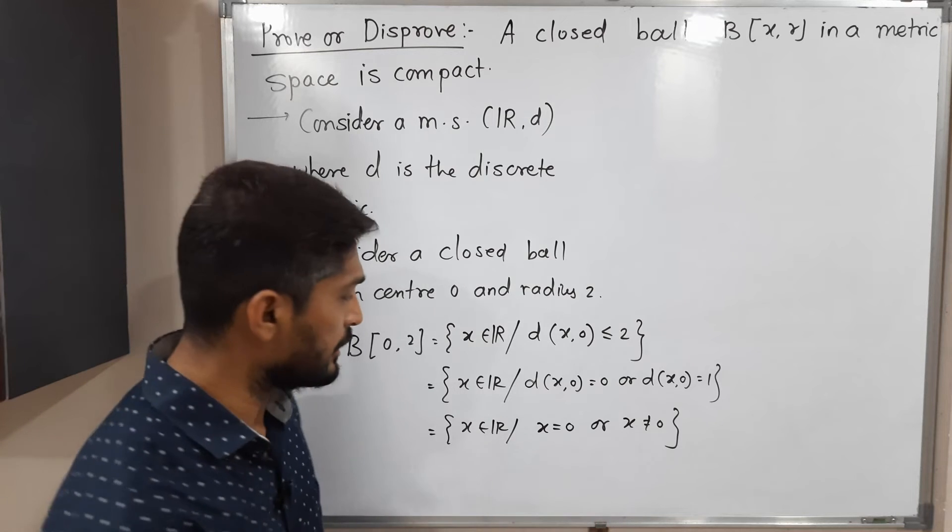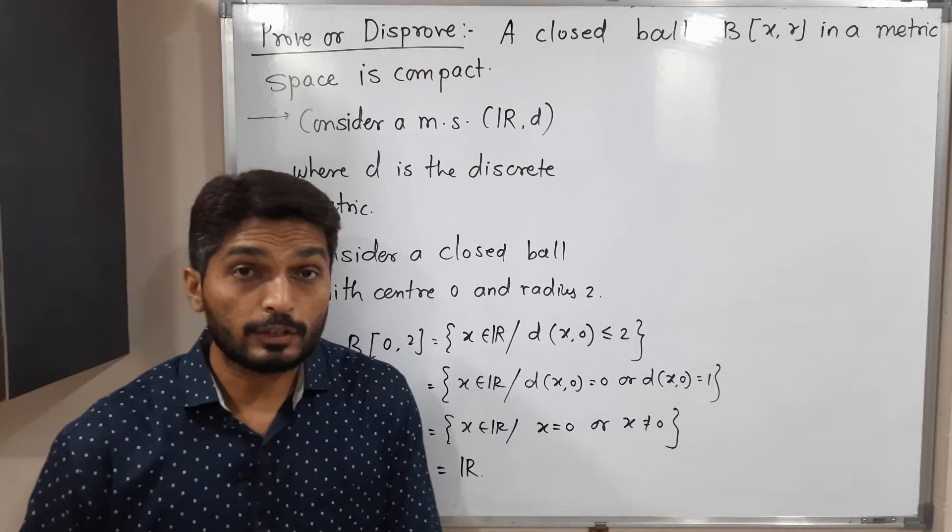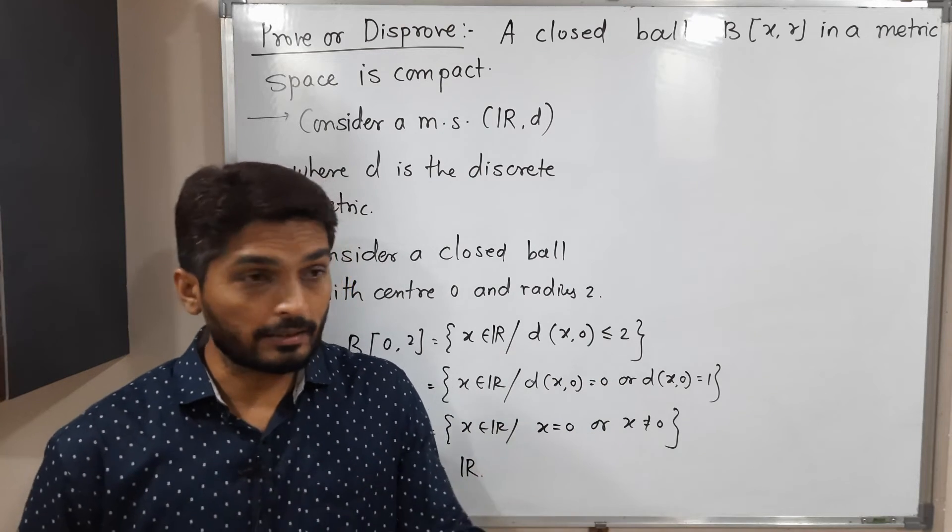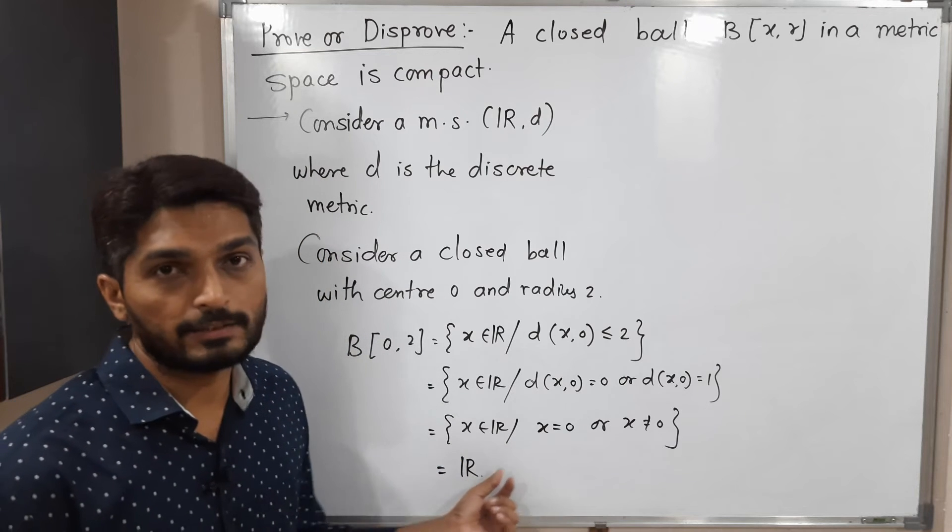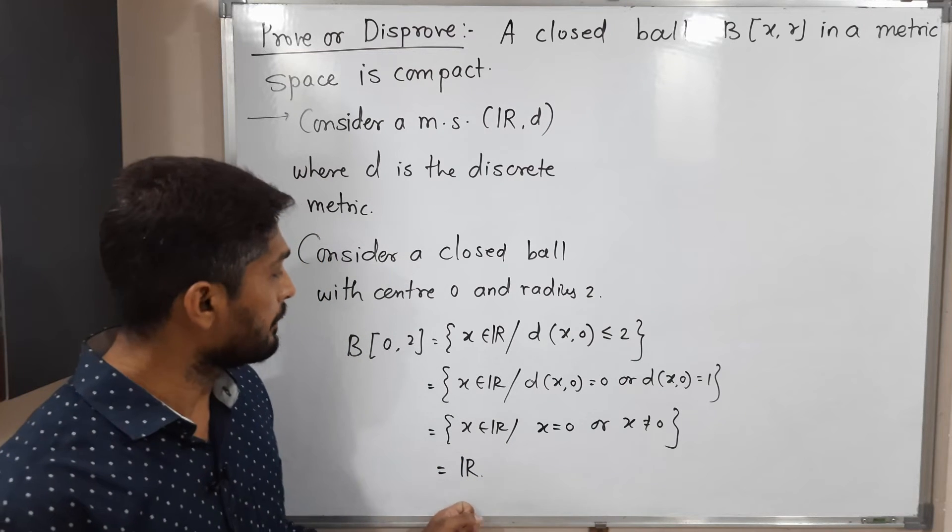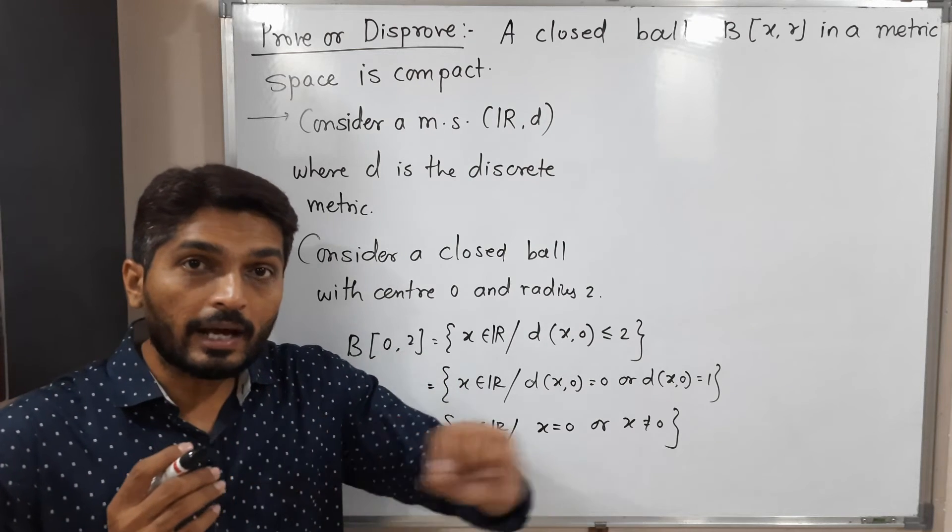Either x is 0 or x is non-zero. Actually all points of the real numbers satisfy this condition, so this is nothing but the entire metric space R. Since if you take any point of R, either it is 0 or non-zero, all points of R satisfy this condition. So the closed ball with center 0 and radius 2 is the entire real line R.